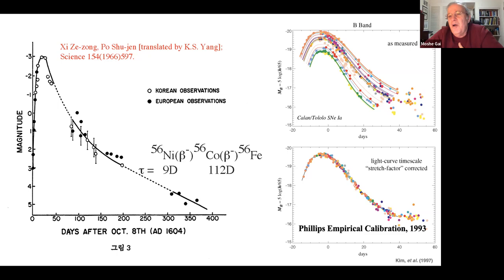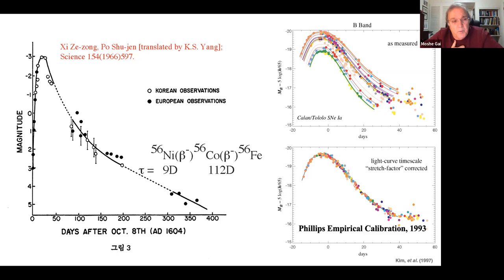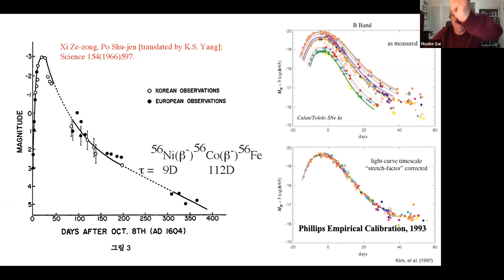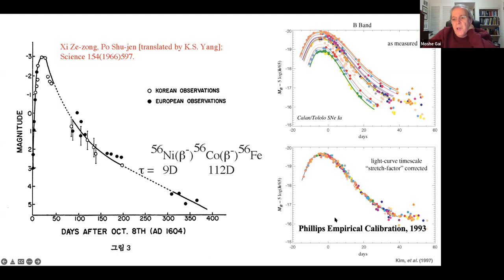Phillips in 1993 found that if you stretch the light curve by the same factor in both axes, all curves fall on one universal curve within 8%. This means we have a calibration for type 1A supernovae. A supernova creates as much light as an entire galaxy - we can measure how much light we receive, compare to the calibration curve to determine how much was emitted, and thus measure distances.